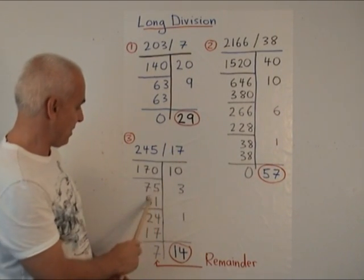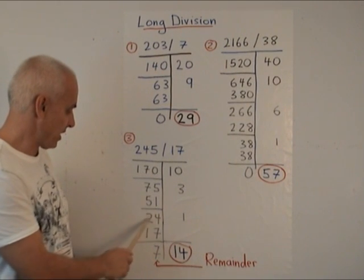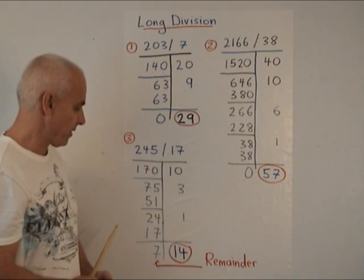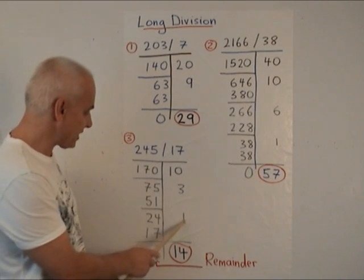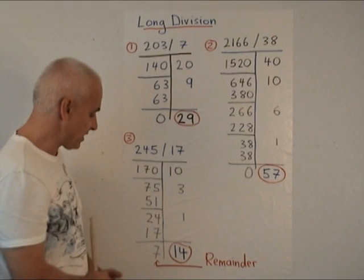I guess 3 seventeens might fit in there. 3 times 17 is 51. We subtract, we get 24 left over. We say we could have actually subtracted one more. Let's subtract one more now. So there's another 17 and we get 7.